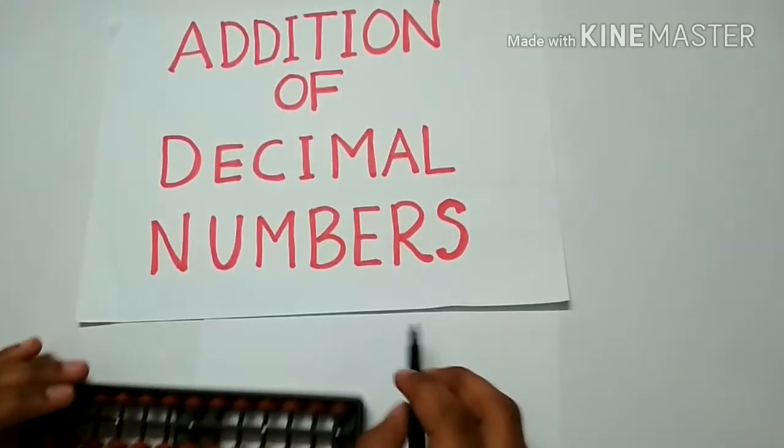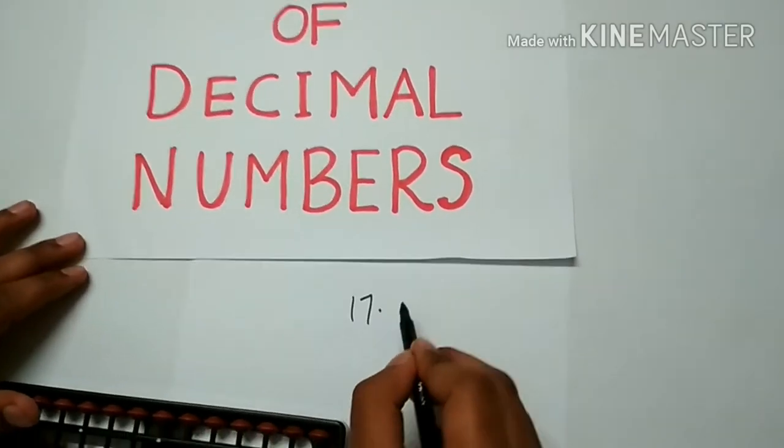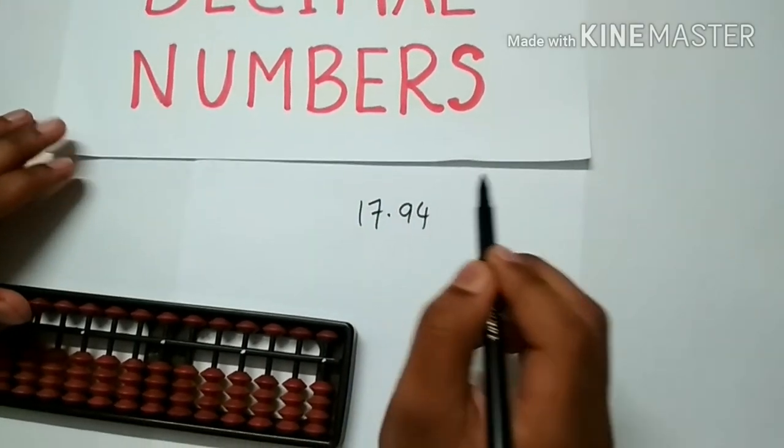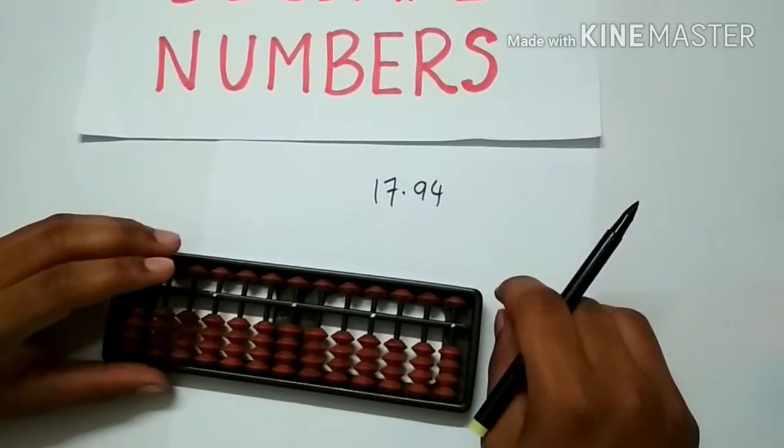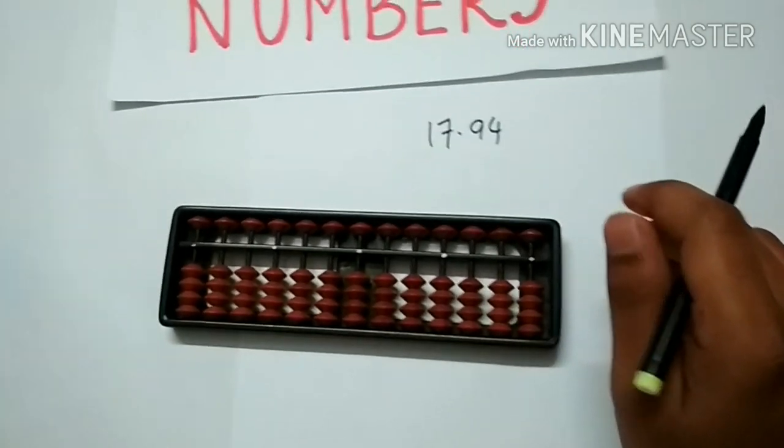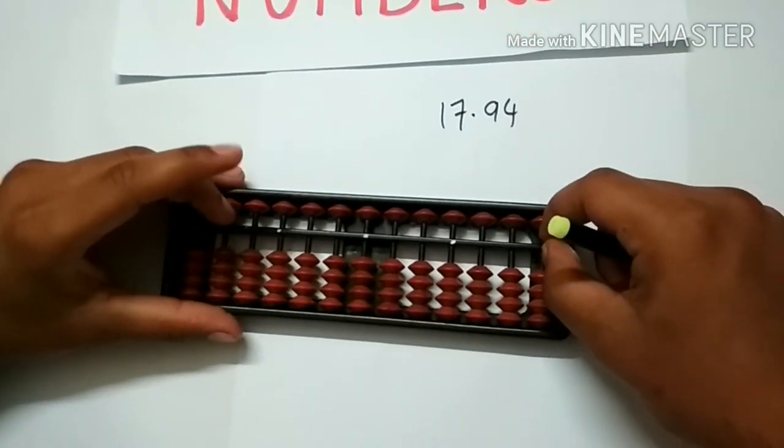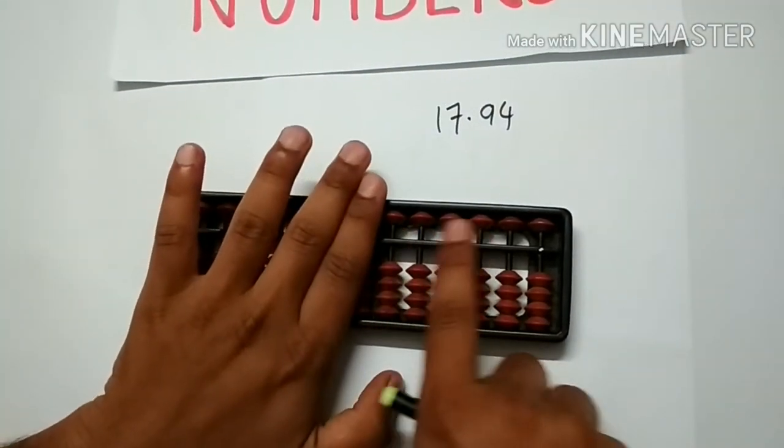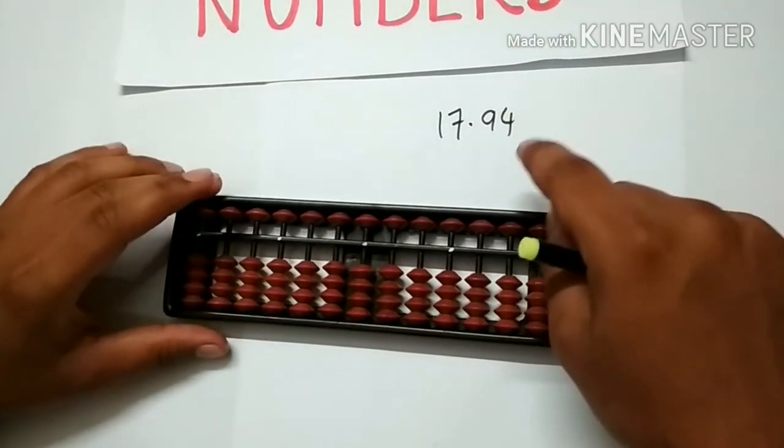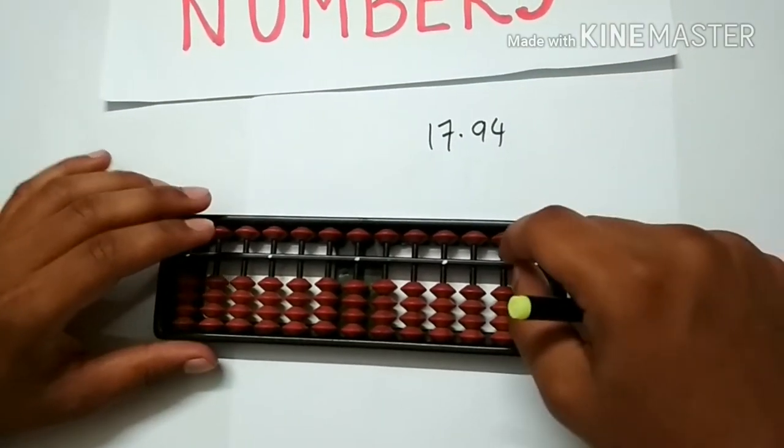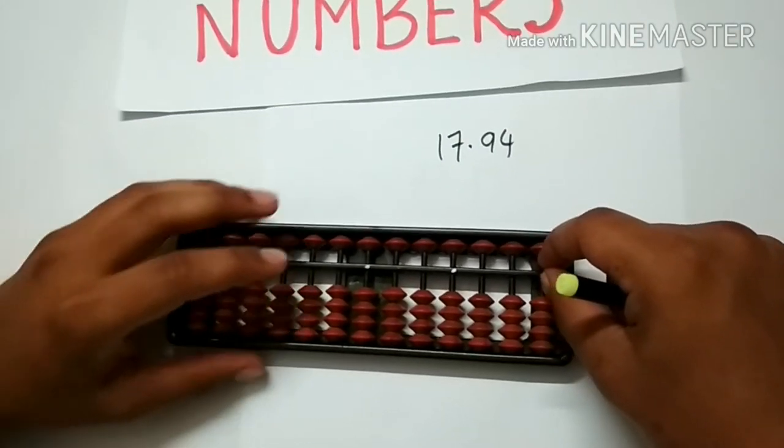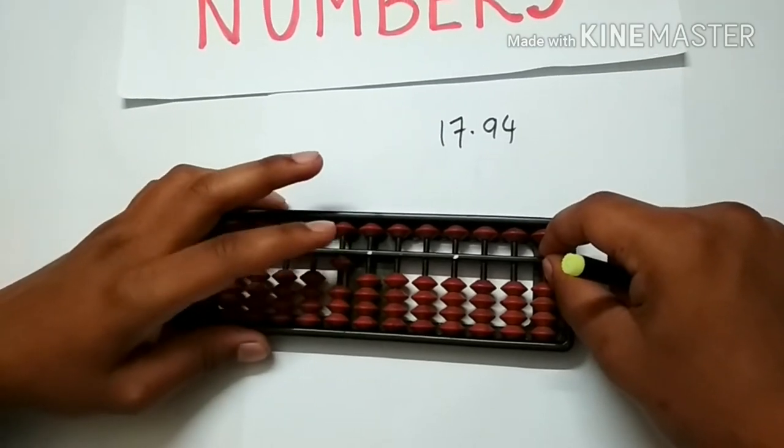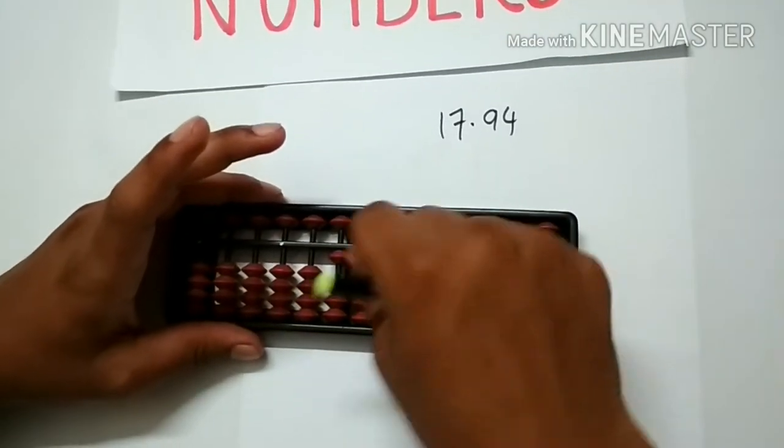Let us take an example: 17.94. Now how to place 17.94 on the abacus? To place decimal points on abacus we have to use the rods which are to the right side of the units rod. Now to place 17.94, 17 is placed as usual - that is 10 on the 10th rod and 7 on the units rod.